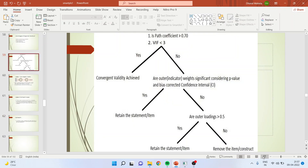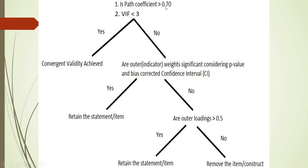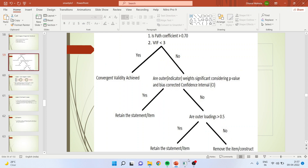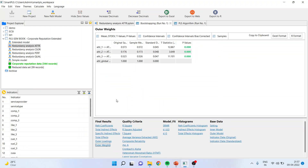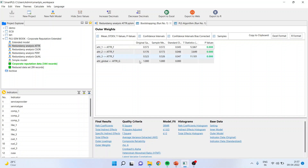This decision tree works as follows: Is path coefficient greater than 0.7? Yes — is VIF less than 3? Yes — convergent validity is achieved. In case of dispute between the two, what to do? Then you will have to go to outer weights and check the p-value. The bias-corrected confidence interval should not contain zero in the confidence interval.